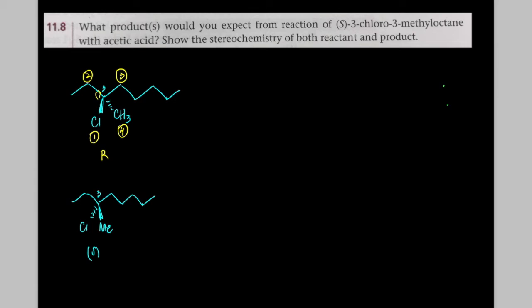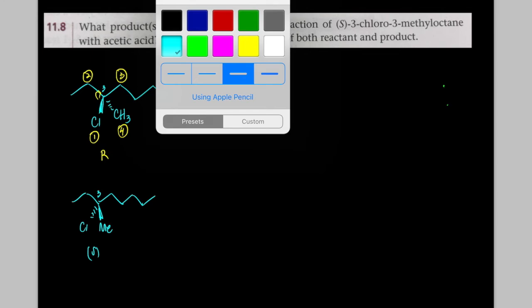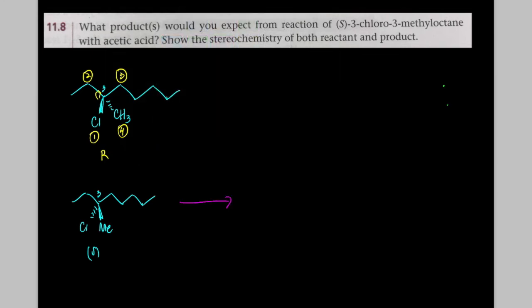Now, when you look at this, there's no strong nucleophile. Acetic acid is this molecule here. And there's no solvent listed. So this is going to perform what's called solvolysis. And we're going to get an SN1 process. And we're going to get retention and inversion. We're going to form a racemic product.